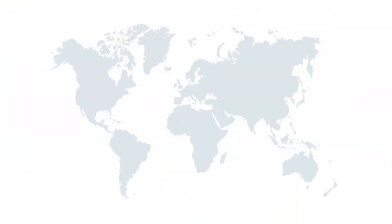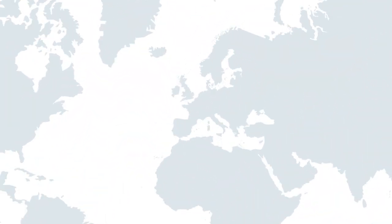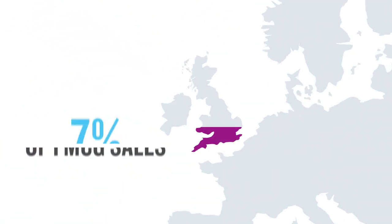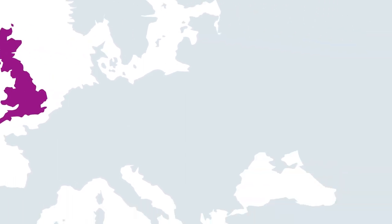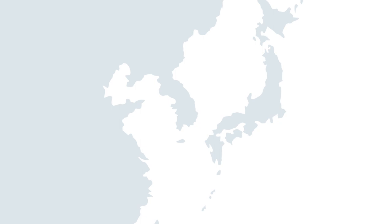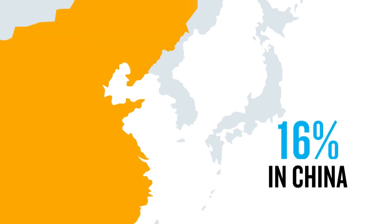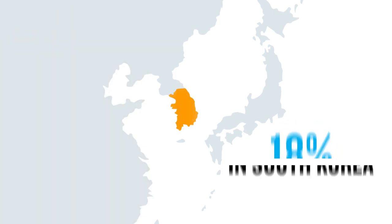In the U.K., e-commerce accounted for nearly 7% of FMCG sales in 2018. The new middle class and millennials across Asia drove growth to 16% in China and 18% in South Korea.